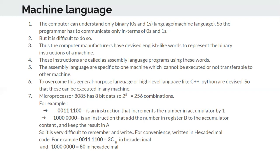Instead of making programmers write code in terms of zeros and ones, which is not possible, manufacturers give an instruction set. When the programmer writes in terms of this instruction set, it gets converted into machine-level language — that is, zeros and ones — which is understood by the underlying microprocessor. This is how it works. But these instruction sets will work only in their respective microprocessor, so this is again a bottleneck.